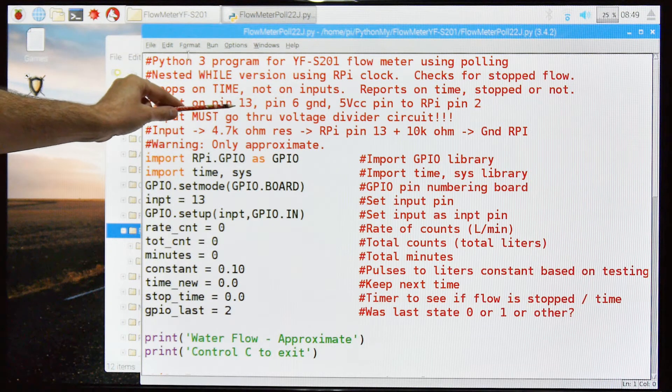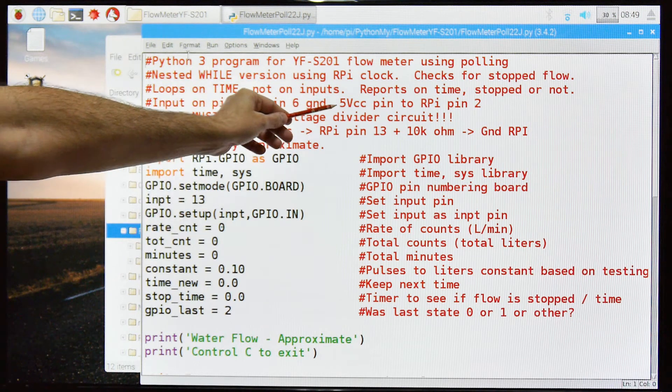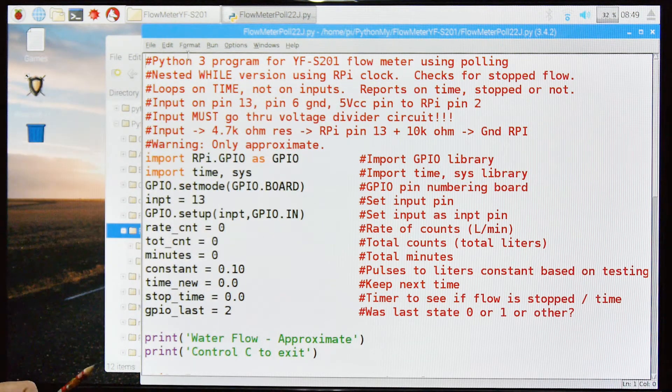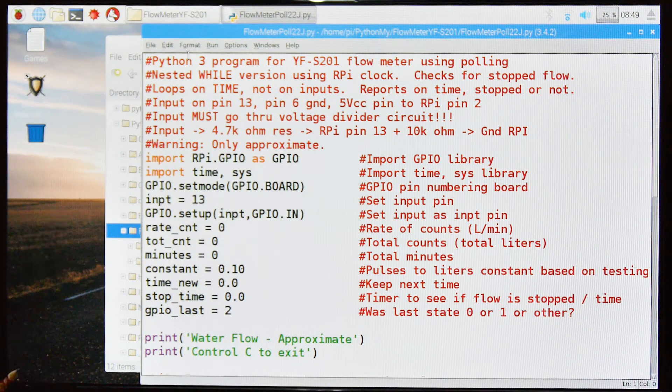This one, again, is on pin 13. Pin 6 is ground. Again, you can use any ground. I think some of my diagrams I show pin 9 or something like that. 5 volt VCC pin to RPI pin 2. You cannot put the 5 volts back into the pie without going through a voltage divider or you will burn up your pie.